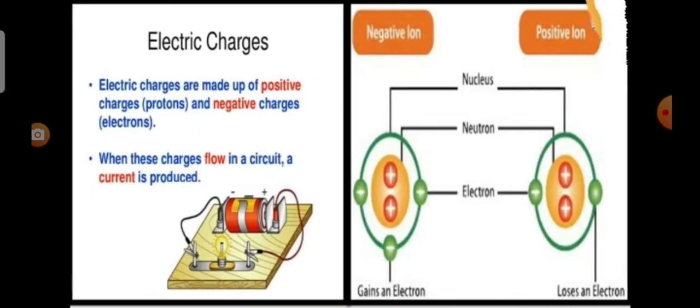Electric charges are made up of positive charges and negative charges. When these charges flow in a circuit, a current is produced.